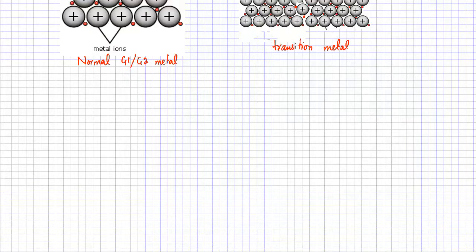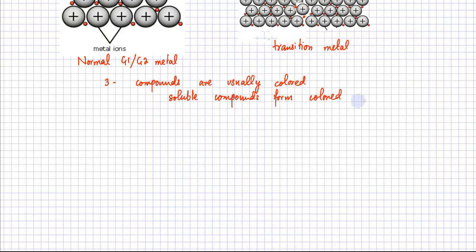So the third point that we will discuss is that transition metal compounds, so the compounds are usually normally they are colored, and when they dissolve in water, if they dissolve in water. So soluble compounds form colored solutions.